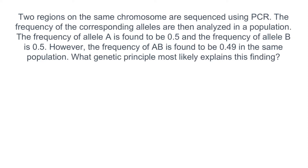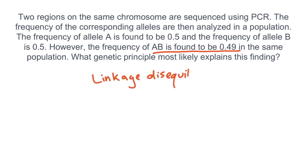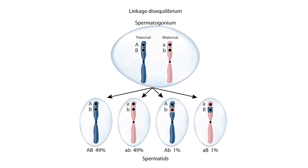What genetic principle most likely explains this finding? This question is very similar to the last one. In the last question, we assumed normal linkage equilibrium, resulting in an AB frequency of 0.25. However, this time we're told that the frequency of AB is 0.49 — much higher than expected. When the frequency of two alleles occurs more or less often than expected, this is called linkage disequilibrium. This is a figure illustrating linkage disequilibrium, which can be found in section 3 of genetics. Notice that this is very similar to the last figure, but this time the two alleles are shown close together. Because the alleles are close together, there is a decreased chance that recombination will occur.